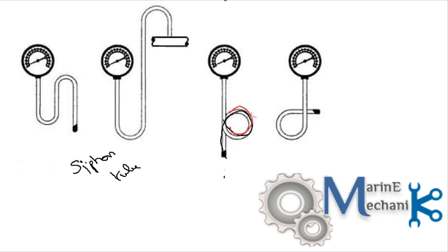So this curved structure like this or a pigtail like this or a U-bend like this is called as the siphon tube.